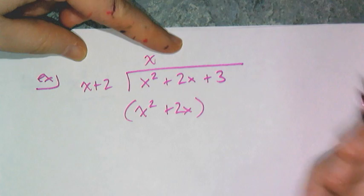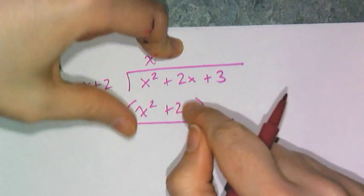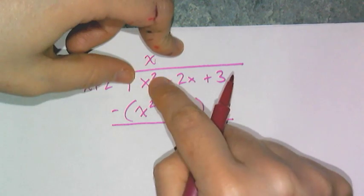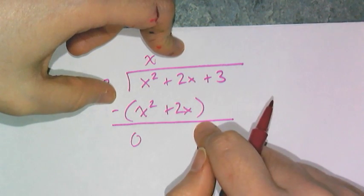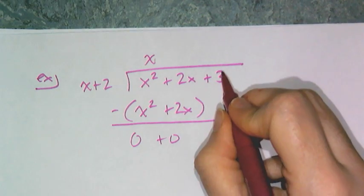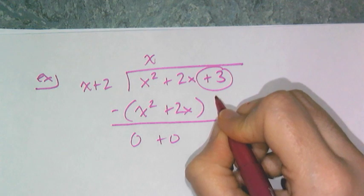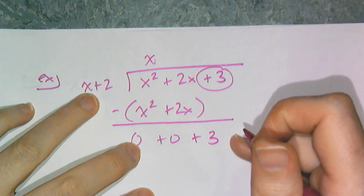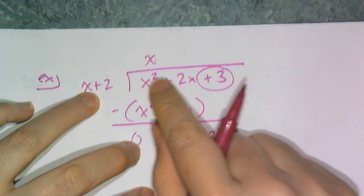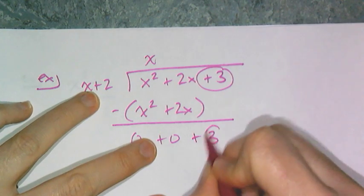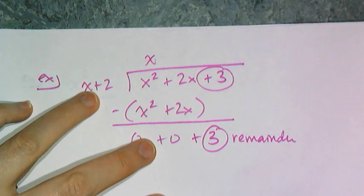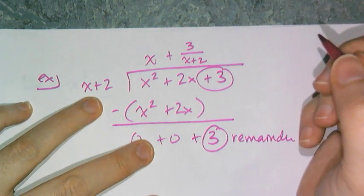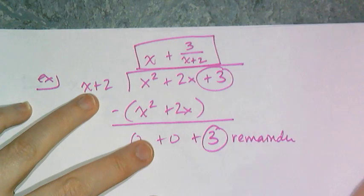I have to subtract — and one thing people mess up is that I'm subtracting the entire polynomial, not just the first term. So I put it in parentheses to show I'm subtracting the whole thing. x² minus x² is 0; 2x minus 2x is 0. I'm left with nothing. But I have the +3 which has to be brought down. Now x is linear and 3 is constant — whenever you have something of a lesser degree remaining, that's your remainder. My remainder is 3, written as a fraction with the divisor: the answer is x + 3/(x + 2).